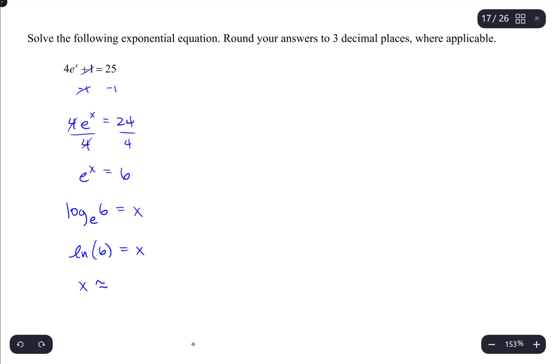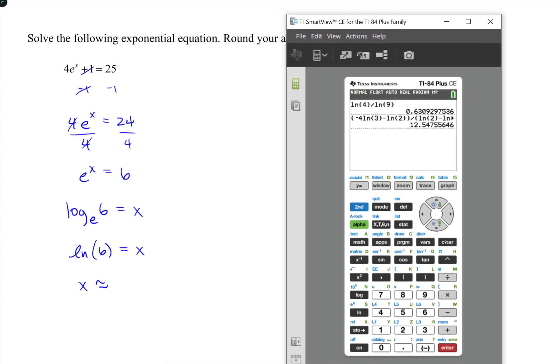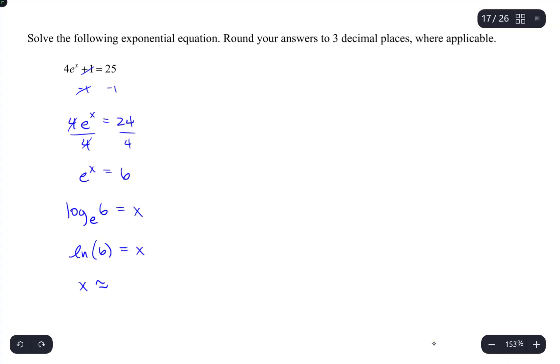And if we want to know an approximate answer, we can just plug that into the calculator and approximate the value of the natural log of 6, which is 1.792 when I round to three decimal places.